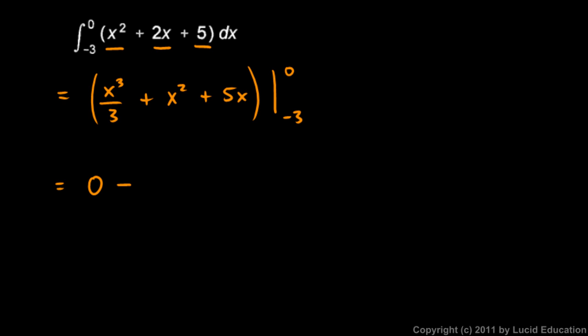So this will be 0 minus this expression with the negative 3 plugged in. So it's going to be negative 3 cubed over 3 plus negative 3 squared plus 5 times negative 3. And we need to put parentheses around all of that because we're subtracting that entire expression.